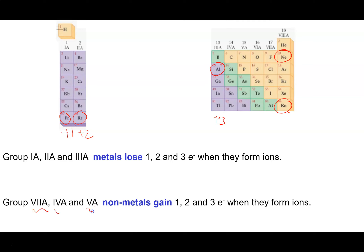Group 7A, 6A, and 5A non-metals love to gain one, two, and three electrons respectively. Fluorine gains one and ends up with 10 electrons; oxygen gains two and ends up with 10 electrons. The nitrogen group loves to gain three and form a minus 3 ion; the oxygen group loves to gain two and form minus 2; the fluorine group loves to gain one and form minus 1. Group 4A is a mixture — its metals tend to form +4 cations and the non-metals, essentially carbon, can form −4 anions, though we don't see +4 and −4 ions very often.